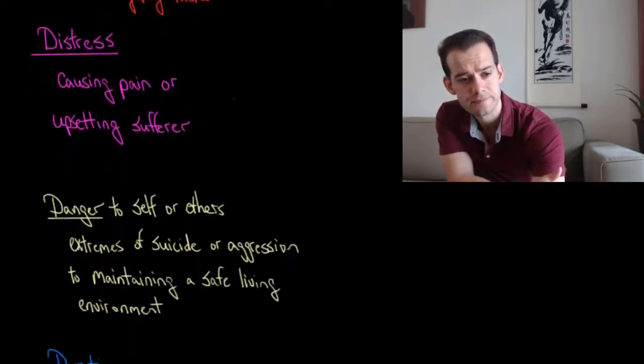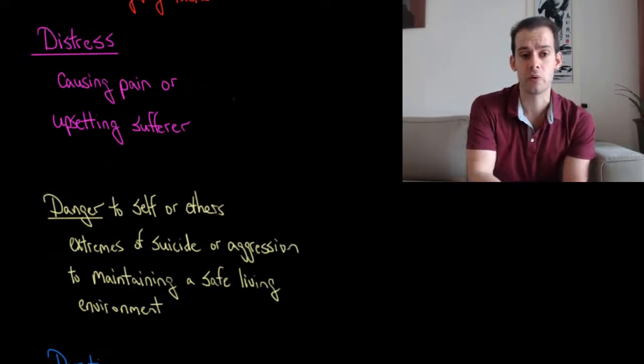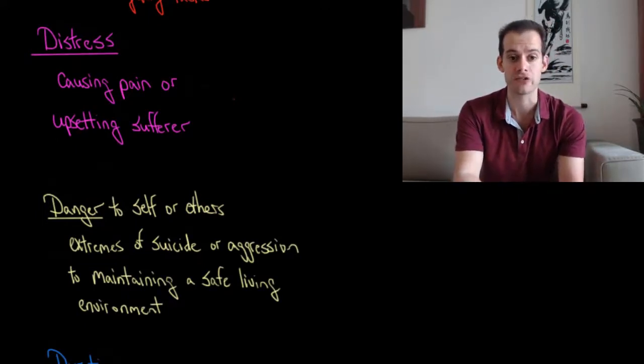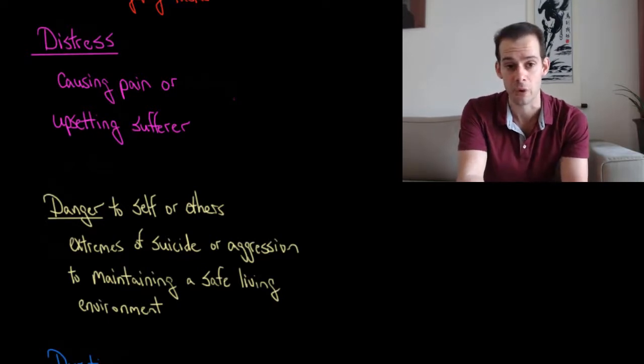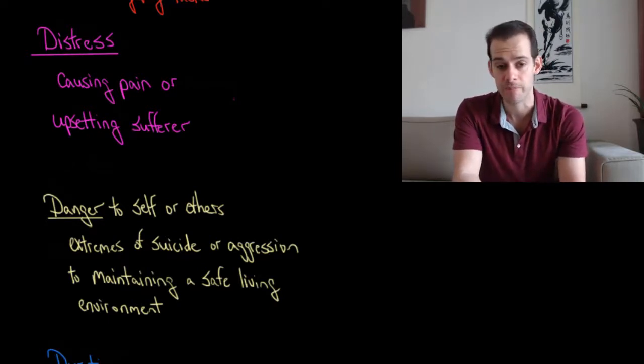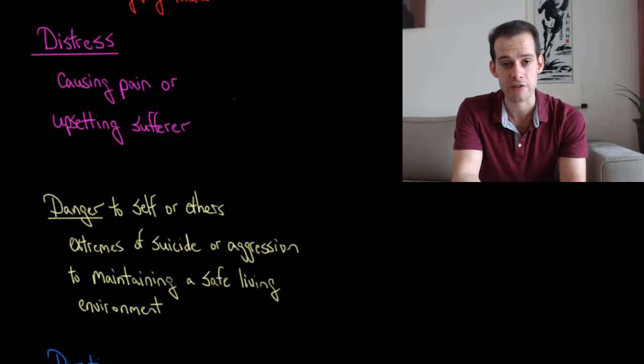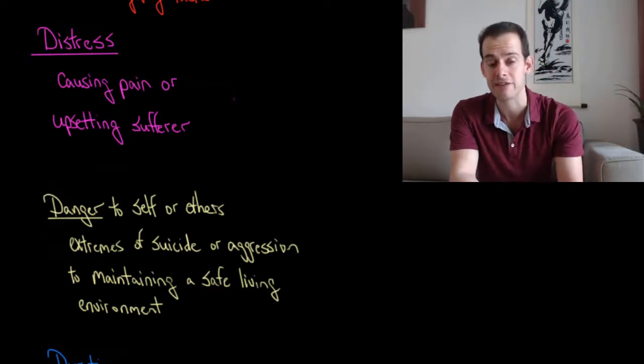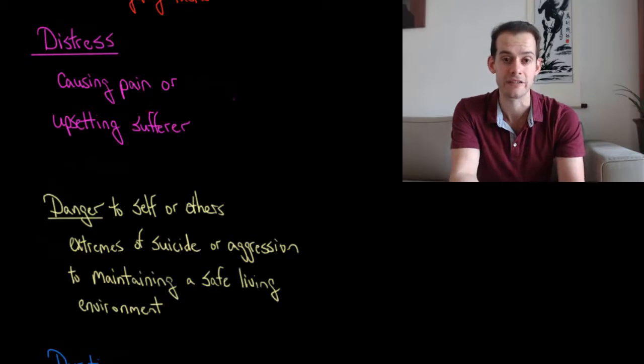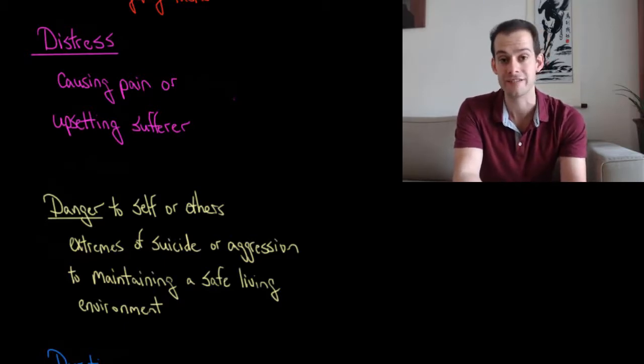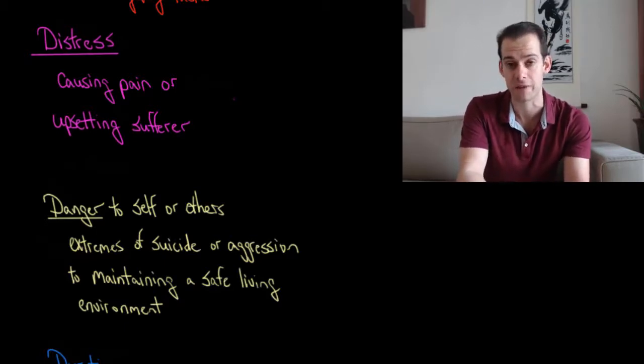And lastly, we consider distress. So distress refers to whether a trait or behavior causes pain or upsets the person who is experiencing it. So then we'd say it's distressful. And so generally these are traits or behaviors that people wish they didn't have. They say it's interfering with my life, it's dysfunctional, it's deviant, it's something that most people don't do. And it's painful for me to experience. I wish that I didn't have this behavior or I wish I didn't have this trait or this thought pattern or something like that.